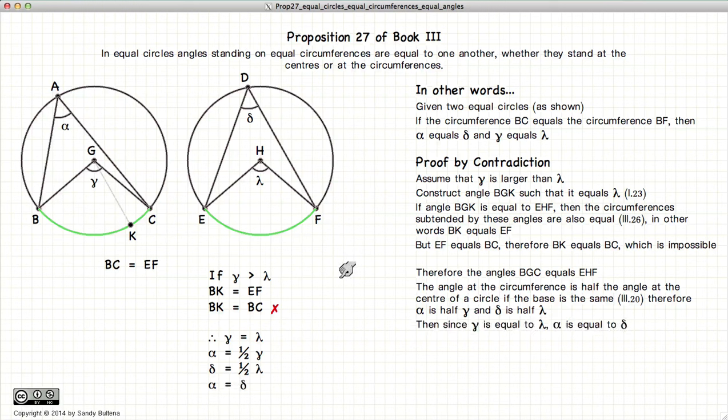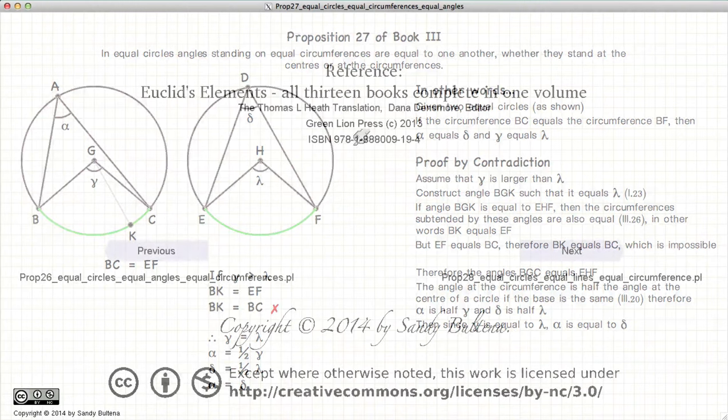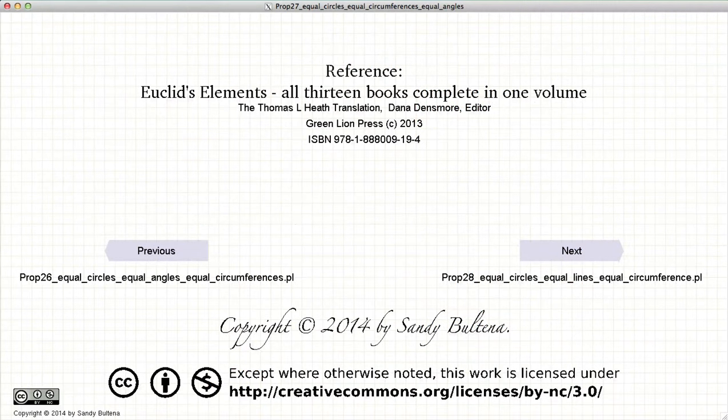And thus we have demonstrated this proof that if we have two equal circumferences and two equal circles, then the angles defining those circumferences from the center are equal and from the circumference are equal. And that concludes this video presentation.